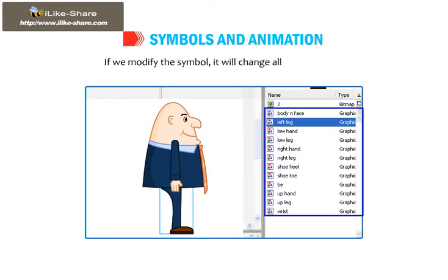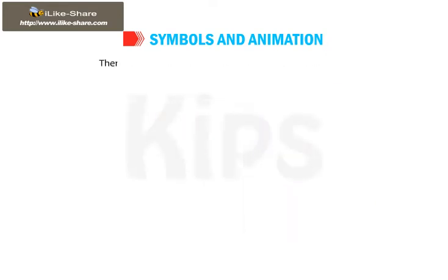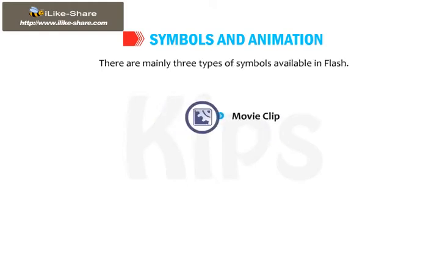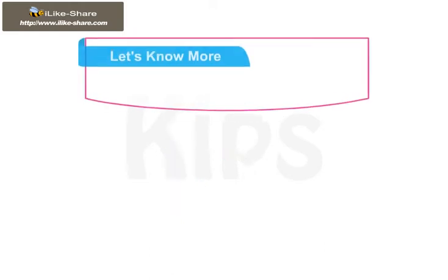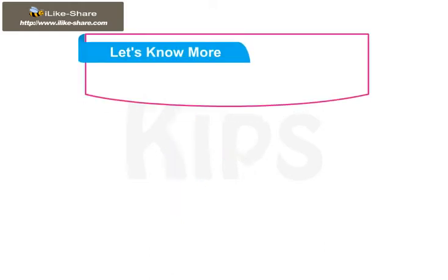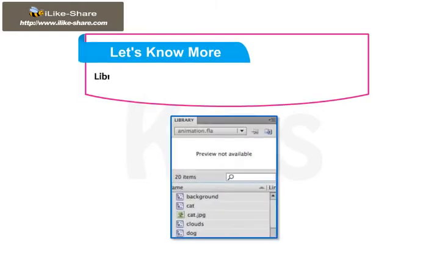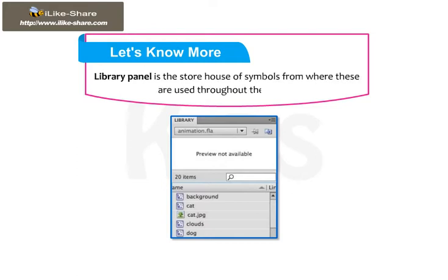There are mainly three types of symbols available in Flash: movie clip, button, and graphic. The library panel is the storehouse of symbols from where these are used throughout the movie.